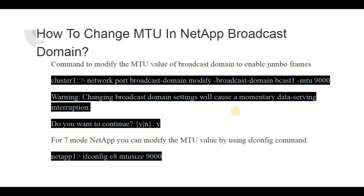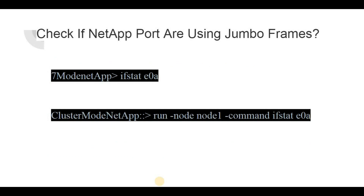In cluster mode NetApp, to change the MTU value you execute the command: network port broadcast-domain modify -broadcast-domain [broadcast name] -mtu 9000. Whatever ports are inside that broadcast domain will all get the MTU value of 9000. In seven mode, you can still modify the MTU value at the individual port level using: ifconfig [port name] mtu 9000. These commands enable or modify the MTU value of the Ethernet ports, and setting it to 9000 enables jumbo frames on those ports.